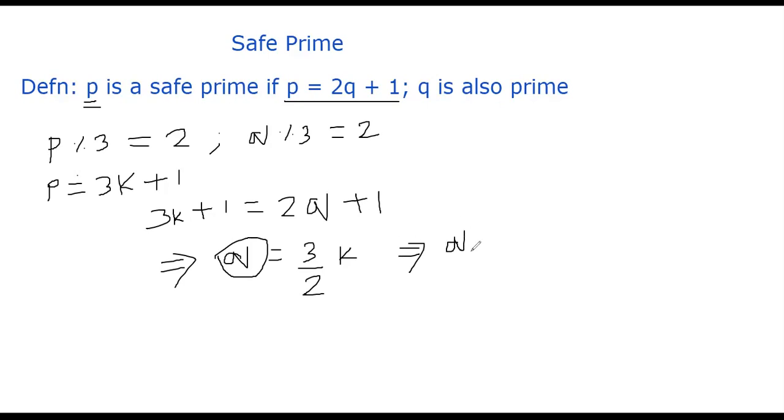So this implies q cannot be prime. q is not a prime. So what we learned is that if p mod 3 is 1, we get a contradiction that q is not a prime.